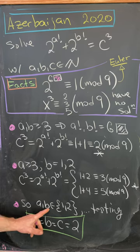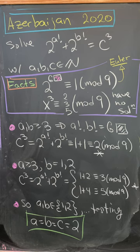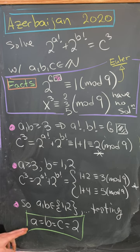So putting that together, we know that a and b both have to be either one or two, but then we can easily test all of those cases to see that we get a equals b equals c equals two, and that's our only solution.